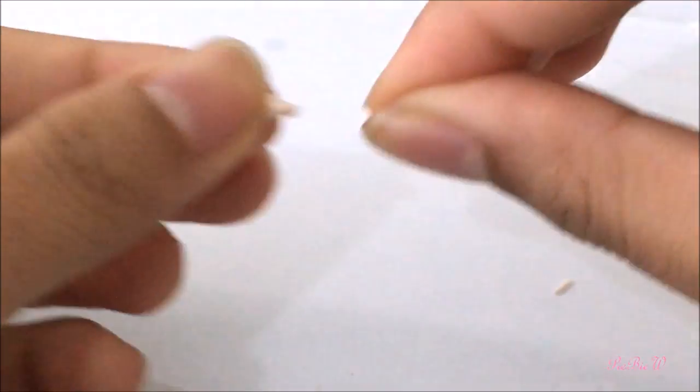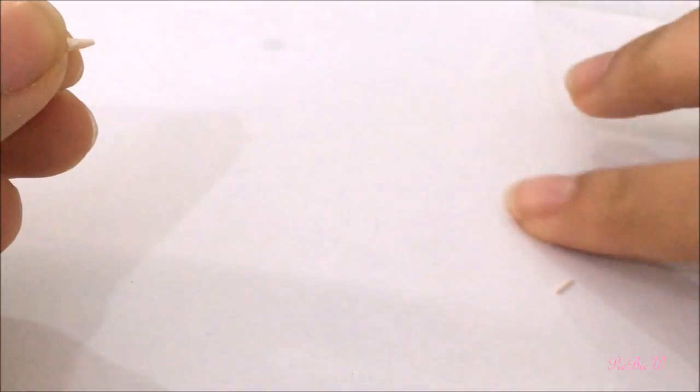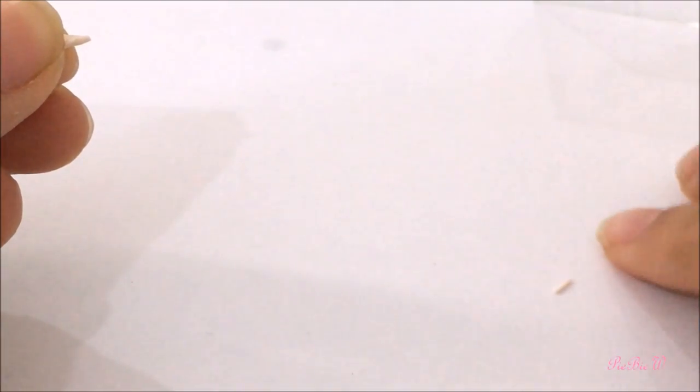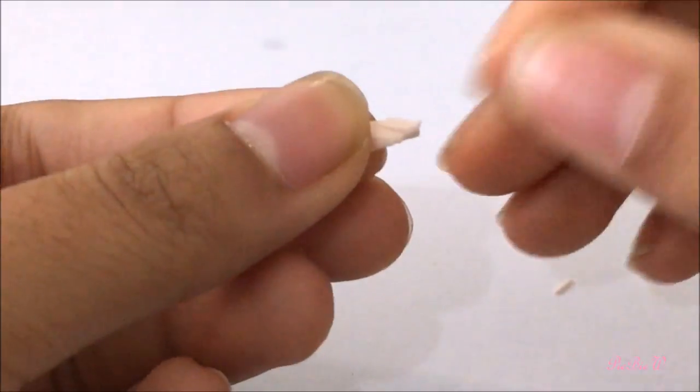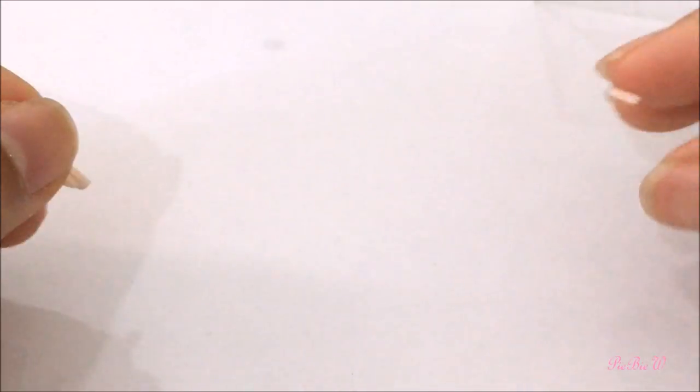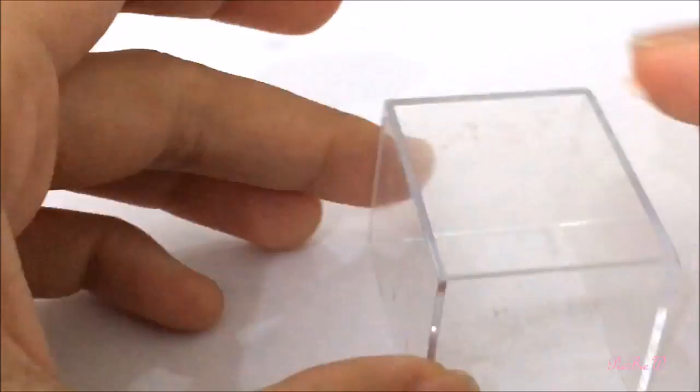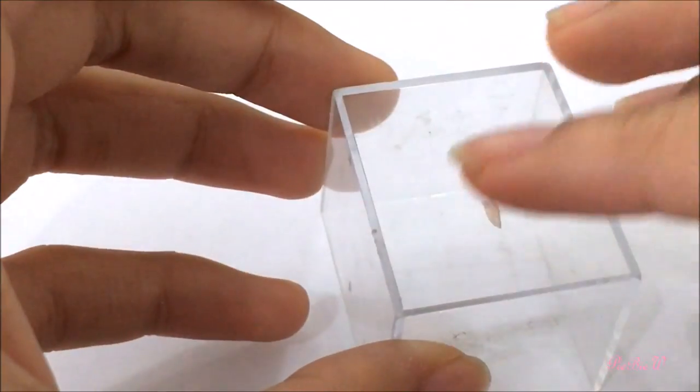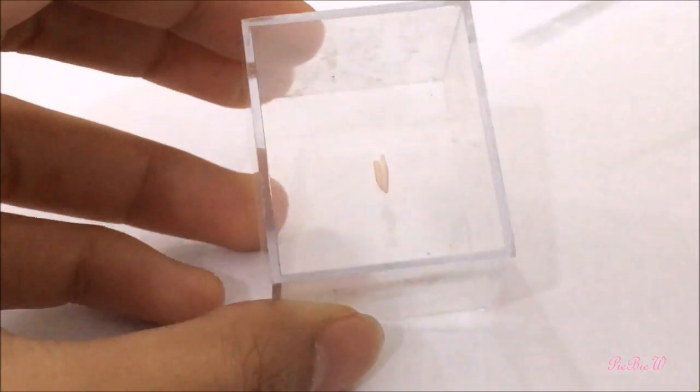So using some skin colored clay we are going to make the legs, just roll it into little sausages and join them together. Now it is helpful to have a flat object that you can hold like this box that I have.